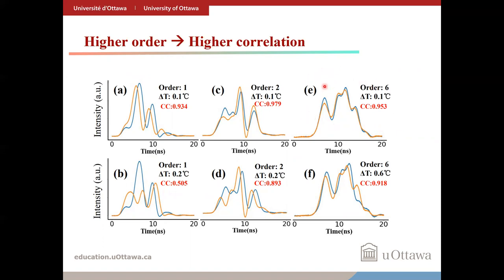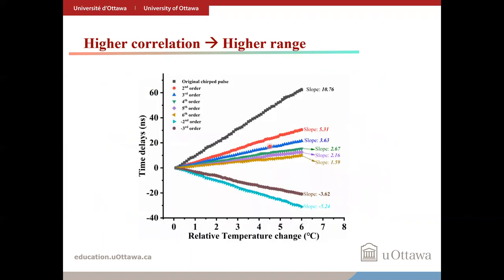If the same measurement is carried out with the sixth-order sideband, a temperature change of 0.6 degrees is required for the traces to begin to decorrelate. This plot shows the recorded time delay for a range of temperature changes. For unenhanced pulses, the slope is around 11. Slopes for high-order sidebands are equal to 11 divided by the appropriate integer values corresponding to the sideband number. Due to decreasing signal-to-noise ratio for higher-order sidebands, the sixth-order sideband is the highest one used for measurements. Note that the slopes become negative for sidebands corresponding to negative values, where the direction of the chirp is reversed.